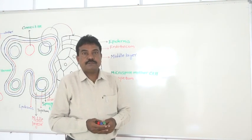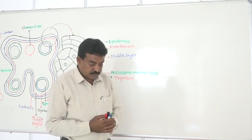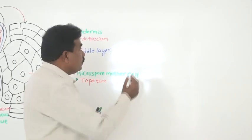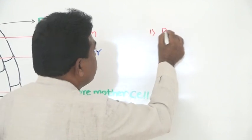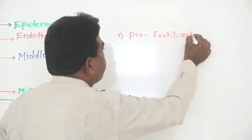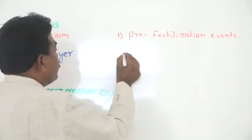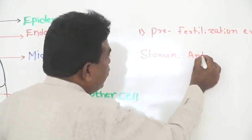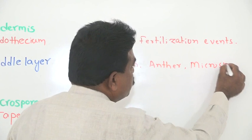In the first part we discussed different parts of the flower. In the second part of sexual reproduction in flowering plants, we discuss the steps of sexual reproduction. The first step is the pre-fertilization event, in which we consider the structure of the stamen, structure of the anther, and the process of microsporogenesis.